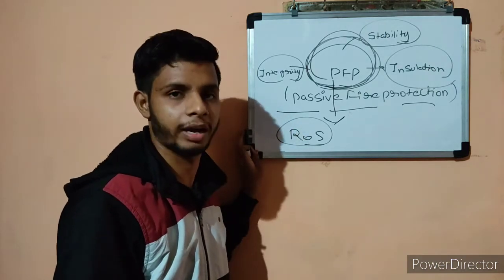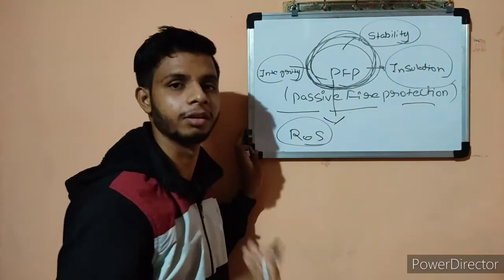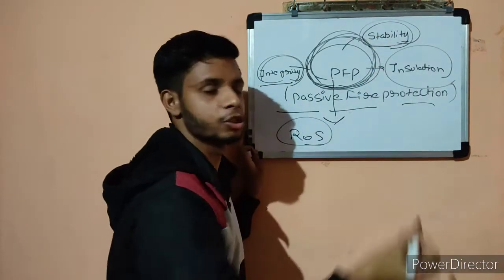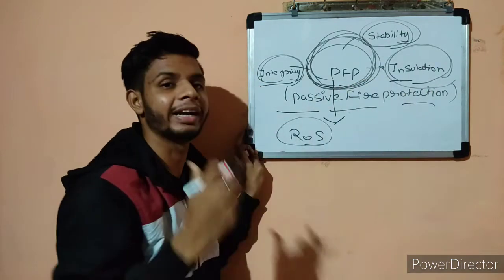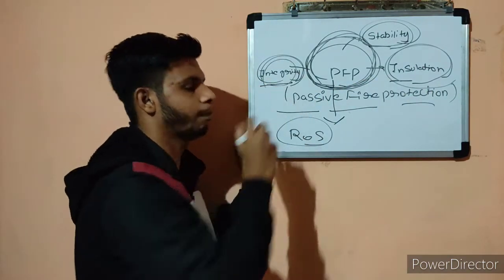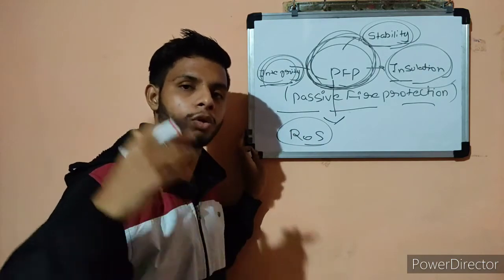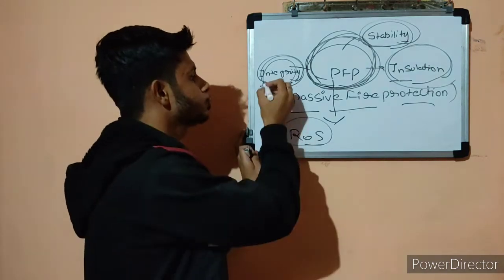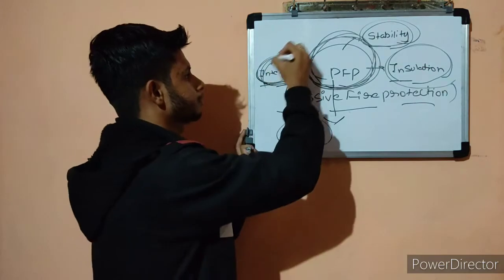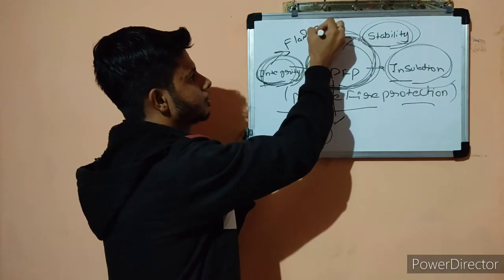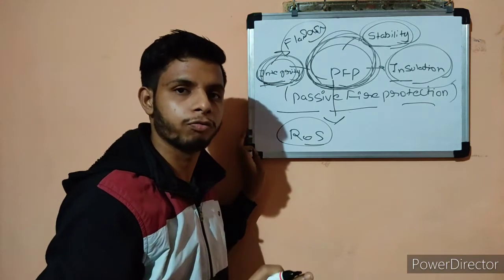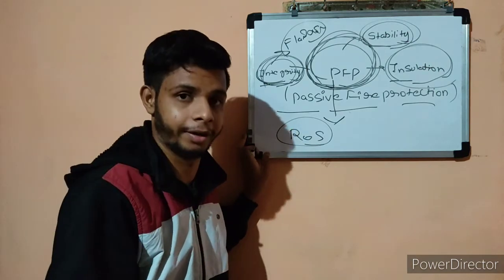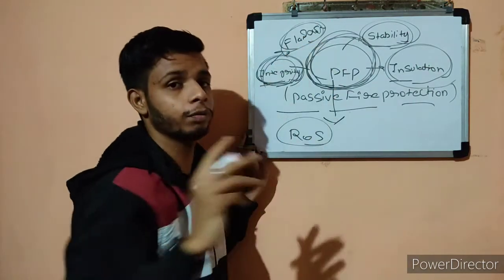When selecting any passive fire protection material, we need to focus on three major things: first is integrity, second is stability, and third is insulation. Integrity means if we are using any passive fire protection material — for example, a door or wall — it should prevent the transmission of flames and smoke, which are very dangerous, from the area where fire occurred to the protected area.